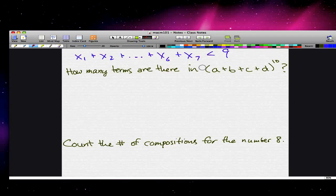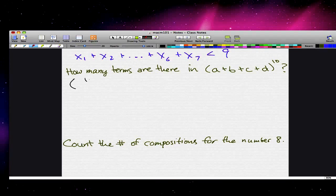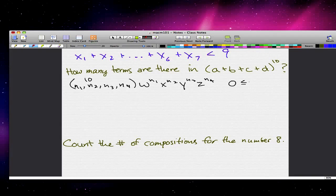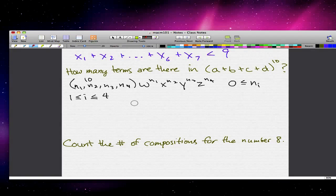Well, each distinct term, if we expand this, is in the form of 10 choose n1, n2, n3, n4 times w^n1, x^n2, y^n3, z^n4. And for all these n1 to n4, they are greater than or equal to 0. So this is n_i from 1 to 4. Remember, we already know what this is.